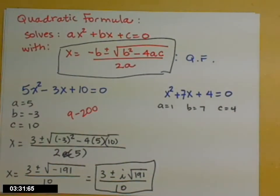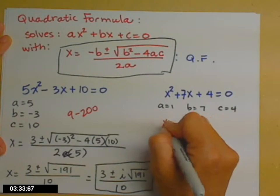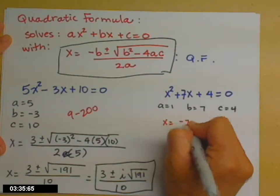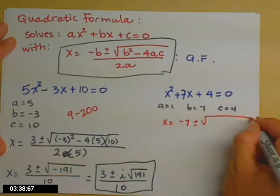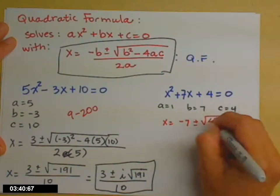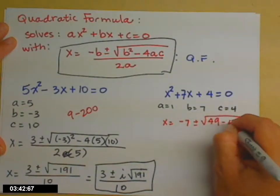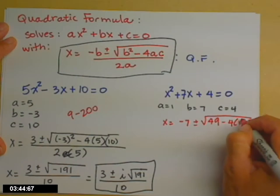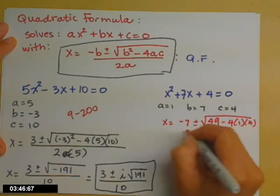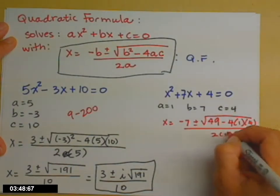And now let's go ahead and plug those into our formula. So x equals negative 7 plus or minus square root, b squared is 49, minus 4 times a, which is a 1, times c, which is a 4, all over 2 times a. a is 1 again.